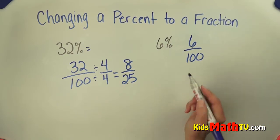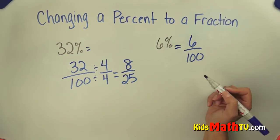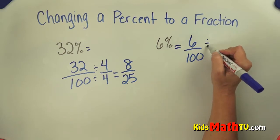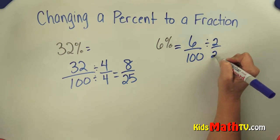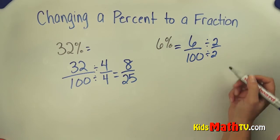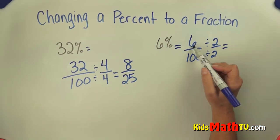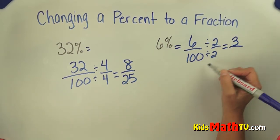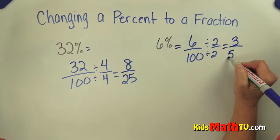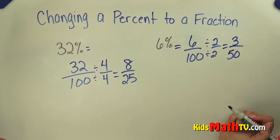Again, we have a fraction now. They are equal. But I can simplify that. In this case, I can divide by 2 over 2. And when I do that, 6 divided by 2 is 3. 100 divided by 2 is 50. And that is in simplest terms.